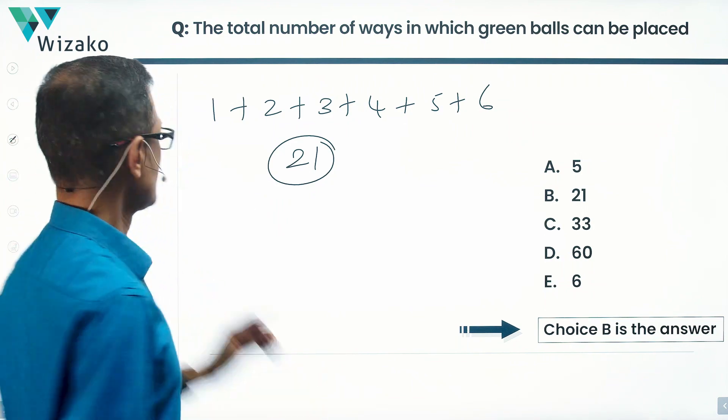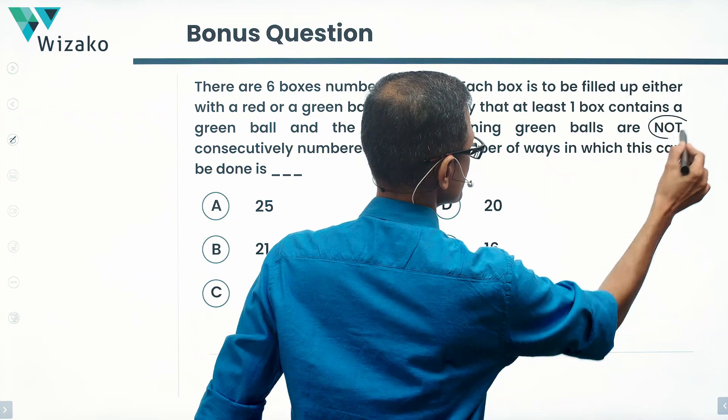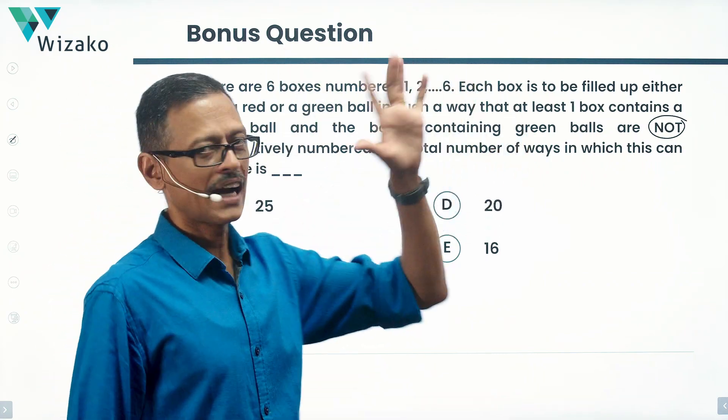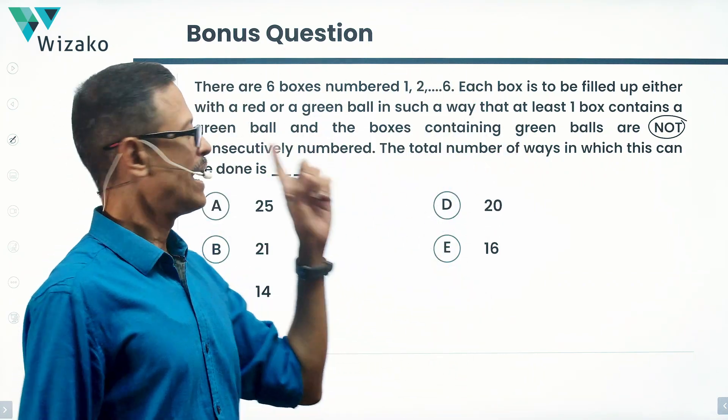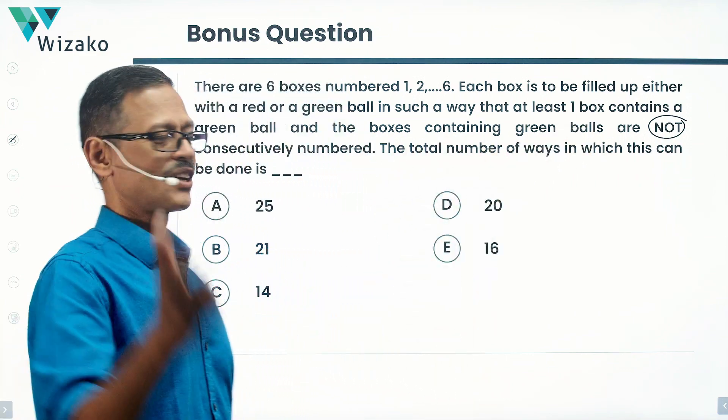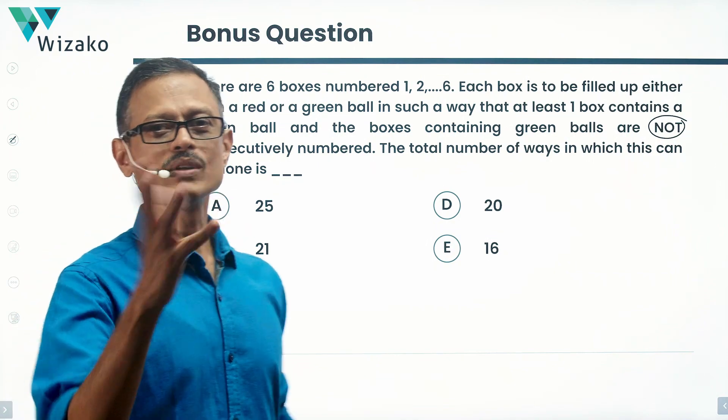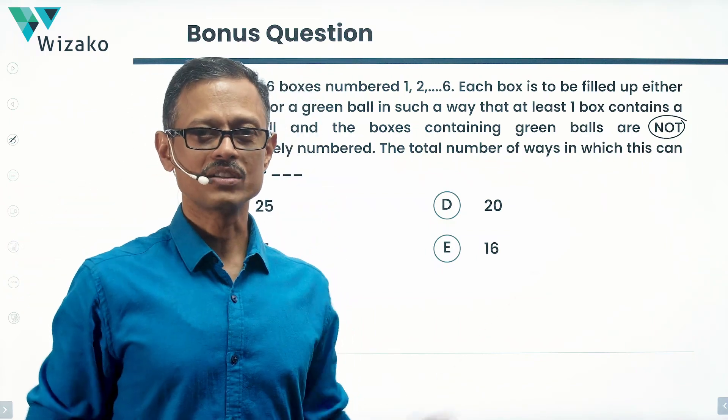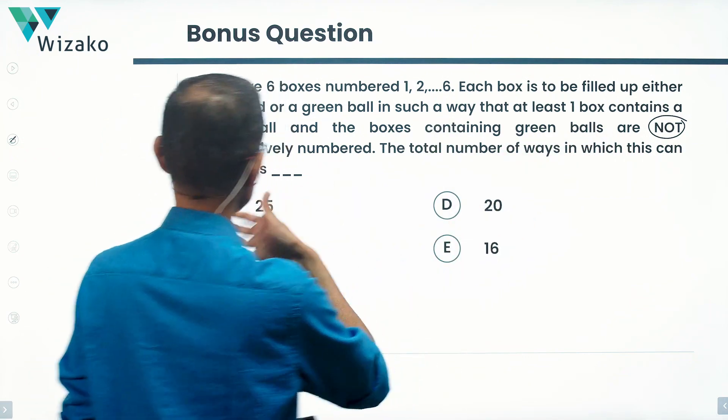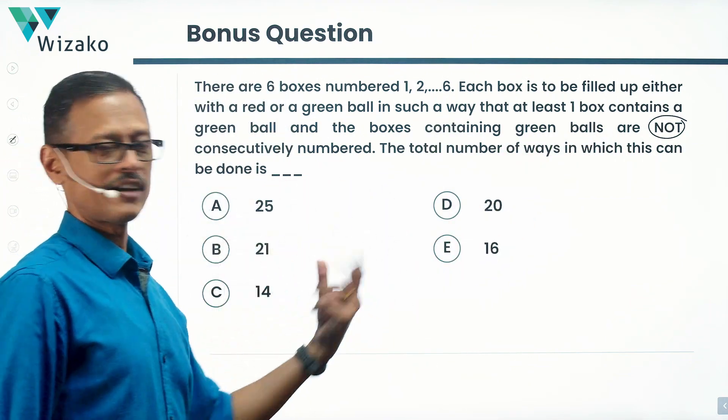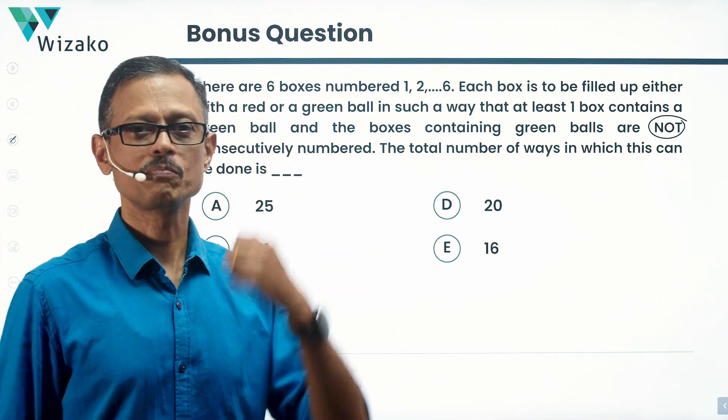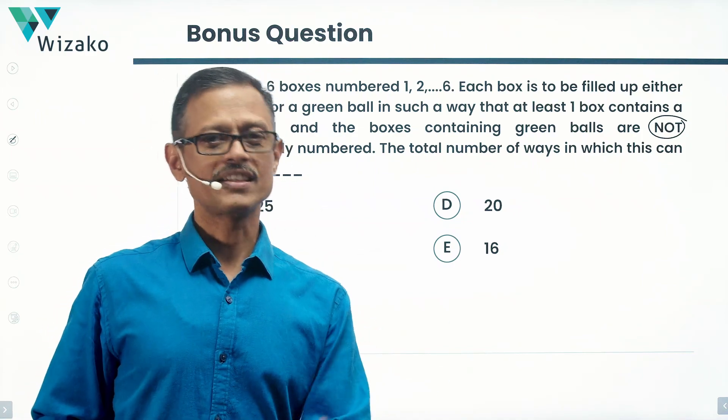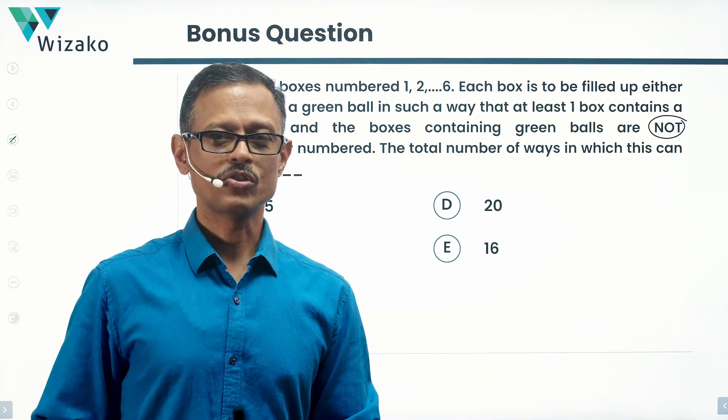I promised you a bonus question. The question remains more or less same. I'm just adding this: Not. There are 6 boxes numbered 1 to 6. Each box is filled up with either a red or a green ball in such a way that at least one box contains a green ball and the boxes containing green balls are not consecutively numbered. You can't have 2 and 3 as green. You can't have 1, 2, 3 as green. You need to have at least one red ball in between any two green balls is what this question is all about. The number of ways in which this can be done. Take a look at this. You can pause the video here. Try this question. Post your answers, post the way you've solved this question, your approach, everything in the comments box. If you have any queries about how to solve it, if you're not able to get the answer, you can post that also in the comments box. We'll help you out to solve this question. Best wishes.